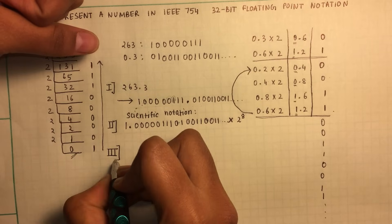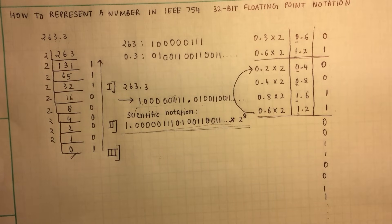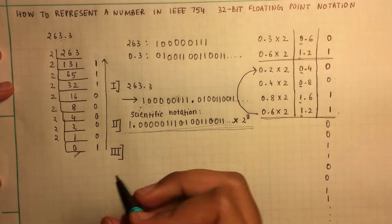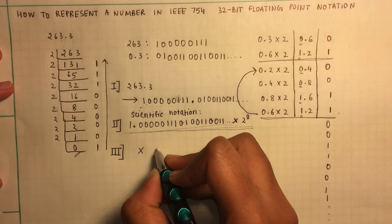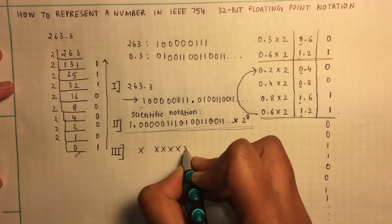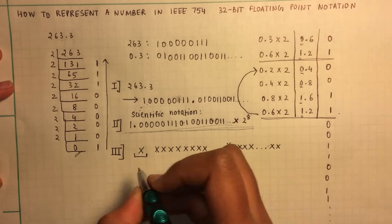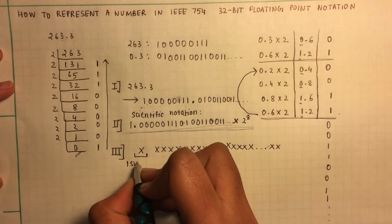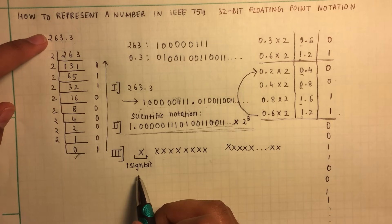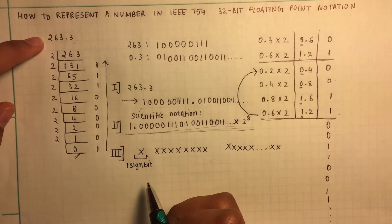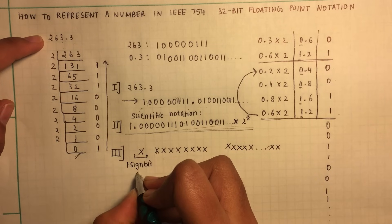The third and final step is writing this in the IEEE 754 format. The format specifies that the first bit is the sign bit. If the number is negative the sign bit is 1, and if it's positive it is 0. Since 263.3 is a positive number, our sign bit will be 0.